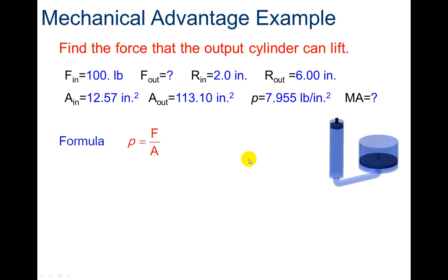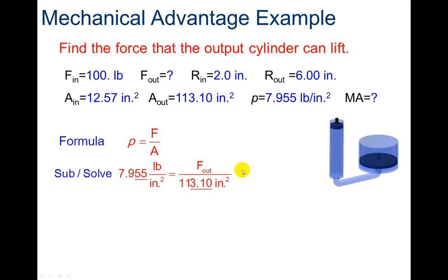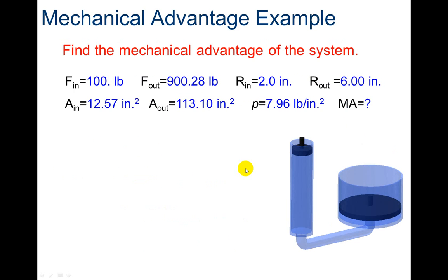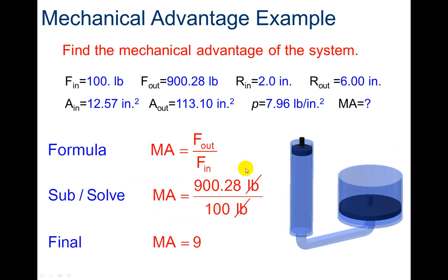Now that I've found the pressure on the left side, I can find force out. Pressure equals force out over area — solving that gives me my output force. So putting it together, my mechanical advantage is force out over force in, which gives me a mechanical advantage of 9.